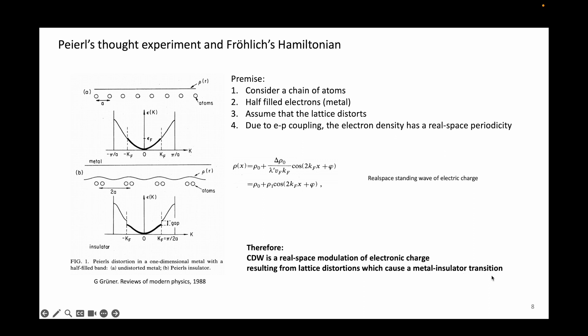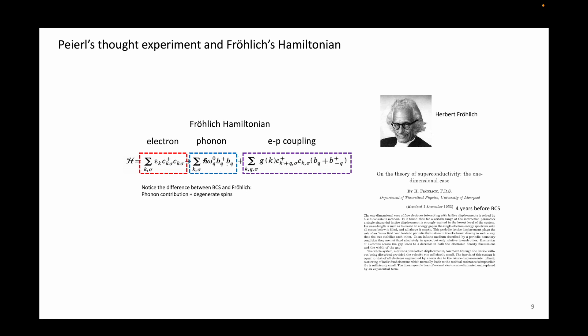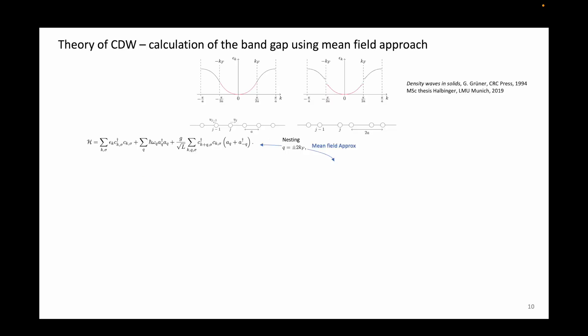The Hamiltonian associated with the charge density wave includes terms on the energies of the electrons, phonons, and their coupling, with g here being the electron-phonon coupling coefficient. This Hamiltonian is named after Herbert Frölich, who was trying to explain the theory of superconductivity in one dimension a few years before the BCS theory. Using Frölich's Hamiltonian and mean field approach, we can derive the band gap and the modulation periodicity of the electron density in a 1D chain.